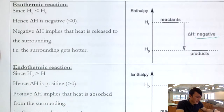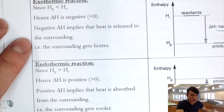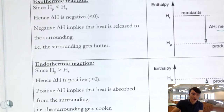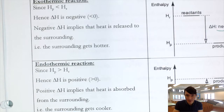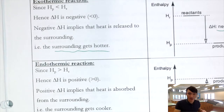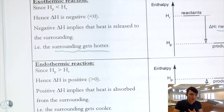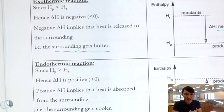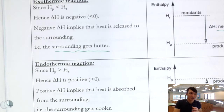When we have an exothermic reaction, the heat released to the surrounding makes the surrounding get hotter — that is why combustion or neutralization makes things hot. An example is burning fuel: you burn it to get heat to cook food or keep yourself warm. Starting from this topic, you must include the physical state of all chemical species in equations, because different physical states can have different energies.